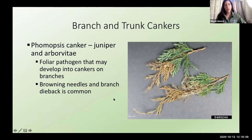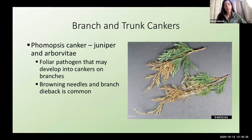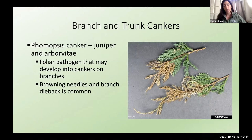Phomopsis canker is another canker seen more often on juniper and arborvitae. It usually starts as a foliar pathogen that may develop into branch cankers. Generally it's more of a cosmetic issue, although in some cases it can lead to tree death. It's characterized by browning of needles from the branch tips inward, with gradual dieback as the cankers develop after the foliar pathogen takes hold.